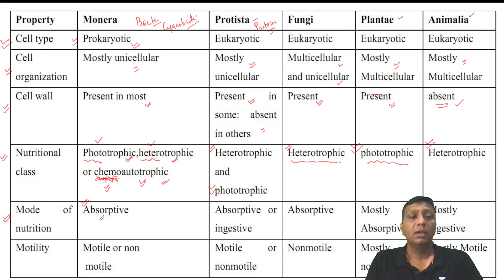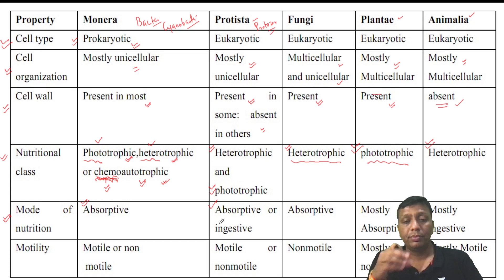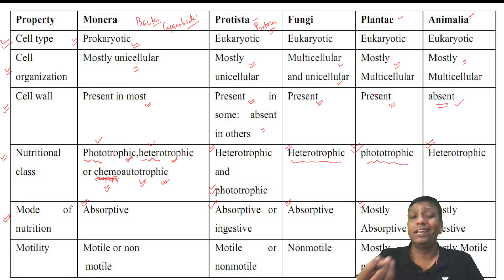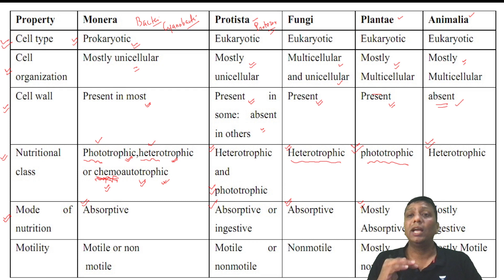Regarding the type of nutrition: Monera have an absorptive type, meaning they absorb food slowly and gradually. Protista are either absorptive or ingestive. We human beings have an ingestive type — we take food inside the mouth, chew, and engulf it. Fungi are only absorptive. Plantae are mostly absorptive — from the roots, they absorb nutrients and water. Animals mostly ingest their food rather than absorb it.